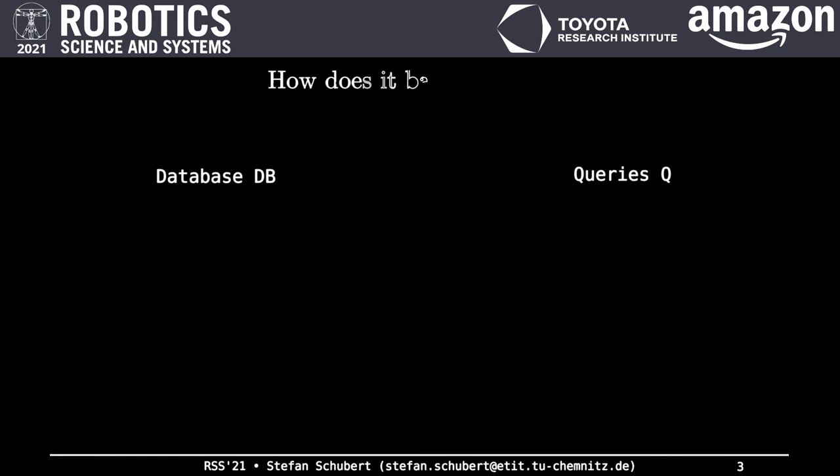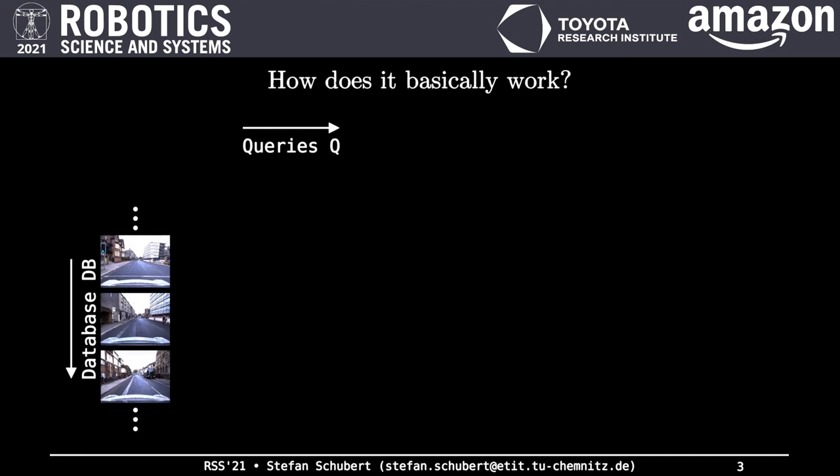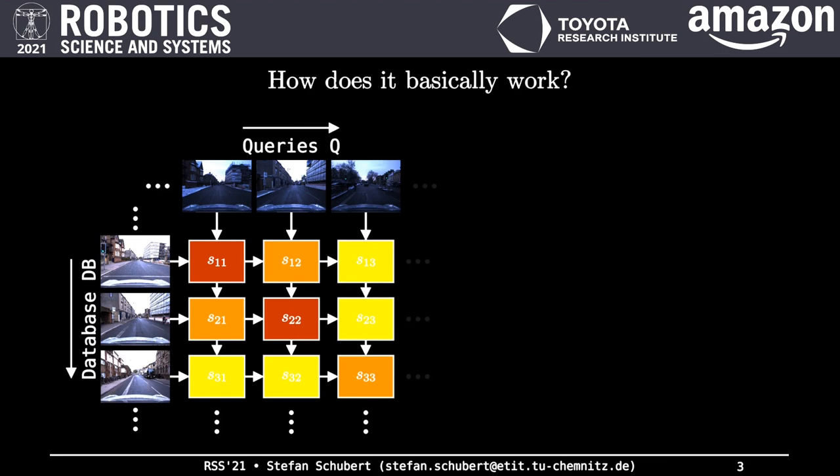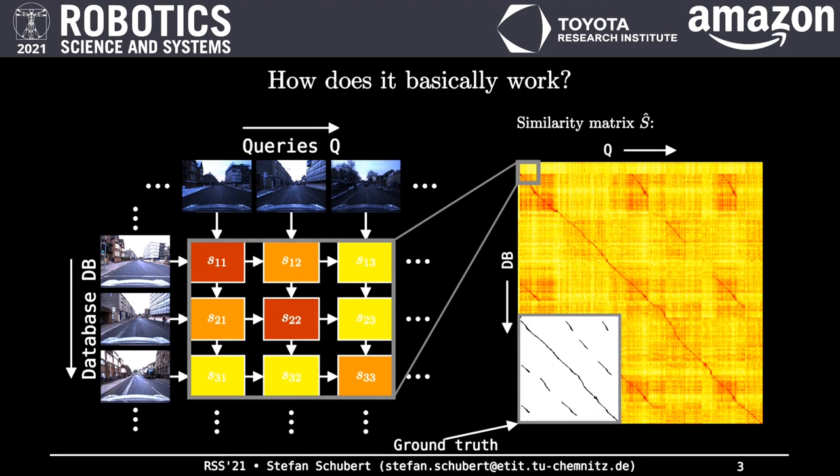Let's be a bit more specific about how place recognition basically works. The database is usually given in advance. As soon as we acquire a new query image, we determine its similarity to images in the database. This is repeated with the next query images as well as with every future query. What we finally obtain is a pairwise image similarity matrix S hat. Its higher similarity values, which are shown as darker pixels, should match the shape of the ground truth in order to perform well.